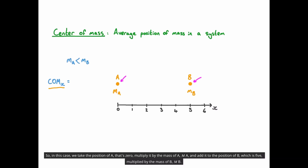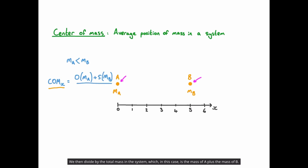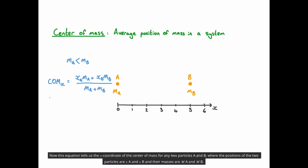So in this case we take the position of A, that's 0, multiply it by the mass of A, mA, and add it to the position of B, which is 5, multiplied by the mass of B, mB. We then divide by the total mass in the system, which is the mass of A plus the mass of B. We can generalise this expression by writing xA for the position of A and xB for the position of B. This equation tells us the x-coordinate of the centre of mass for any two particles A and B, where the positions of the two particles are xA and xB, and their masses are mA and mB.